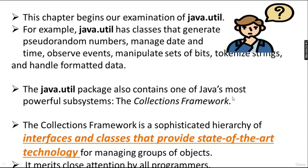The tasks of java.util include generating pseudo-random numbers, date/time management, event handling, manipulating bit sets, tokenizing strings, and handling formatted data. The java.util package also contains one of Java's most powerful subsystems — the Collection Framework — and this is the main topic of this session.